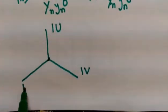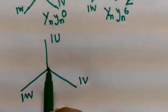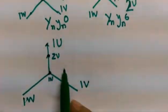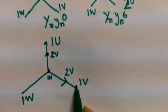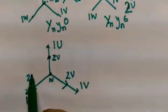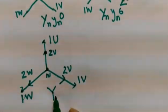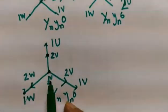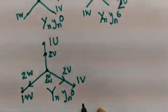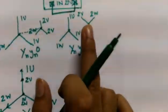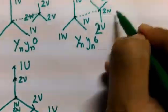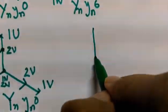If the transformer is YnYn0, this arrangement will give you a resultant phasor where 1U, 1V, 1W are on the primary side, and 2U, 2V, 2W are in the same direction — the resultant phasor will be of this form. If the vector group is YnYn6, shorting of the two neutrals will give you a resultant phasor in the opposite direction.